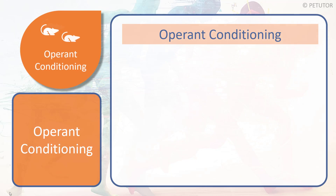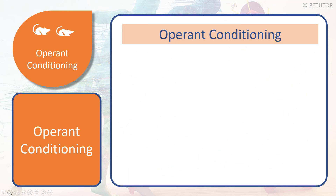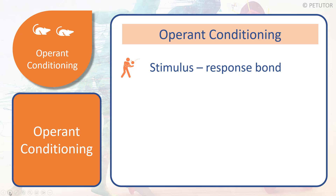There are five key pieces of terminology that we need to be aware of. The first is the stimulus-response bond, sometimes referred to as the SR bond, and we'll have a really good look at that in our next video to make sure we've got a great understanding of what this is about.